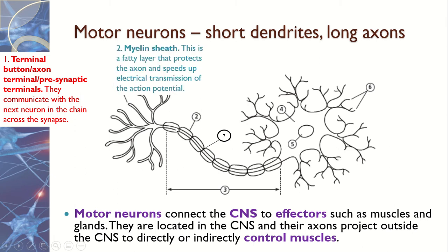Next we have the myelin sheath — the circular layer around the neuron. It's a fatty layer that helps protect the neuron and ensure the information is held and not broken. The more you remember something, practice it, or recall it, the fattier your myelin sheath will get. When you're learning to ride a bike, it's hard at first, but the more you practice, the more your myelin sheath develops, helping you remember it for your whole life.